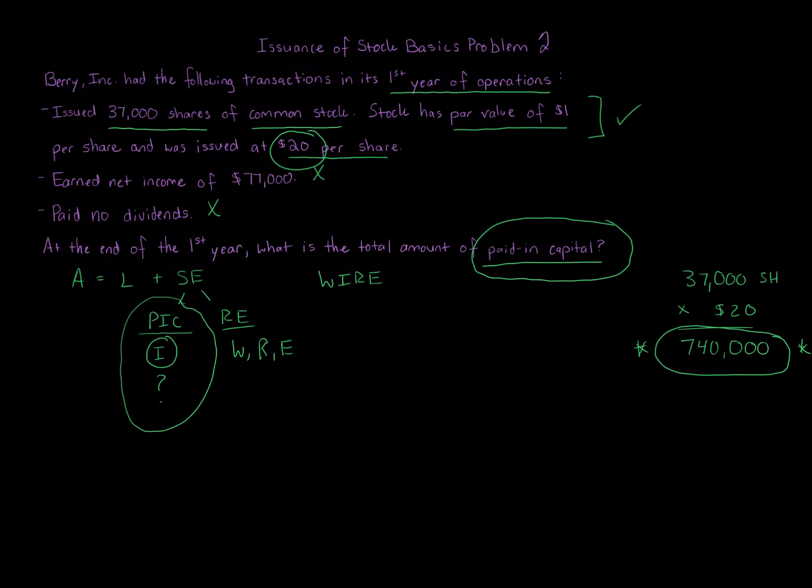This is paid-in capital. So remember, paid-in capital we can break up into the actual stock portion—common stock, preferred stock—which is going to be the par amount or the no-par stated value. And then the in excess is the difference. But the total paid-in capital, we add the two numbers together.